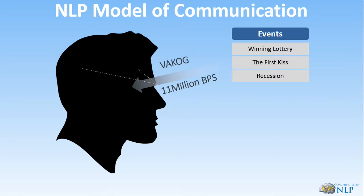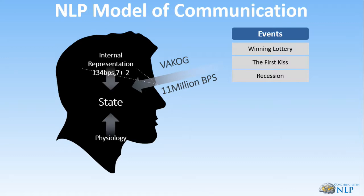That's why when we create our internal representation — made up of pictures, sounds, feelings, tastes, smells, and self-talk (auditory digital stands for self-talk) — that information, after being deleted, generalized, and distorted, results in our own 134 bits. Two people standing next to the ocean at the exact same time, looking out at the exact same water, can have two totally different experiences.